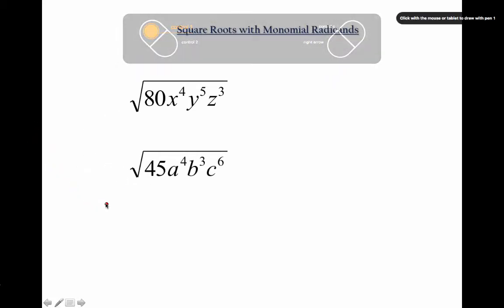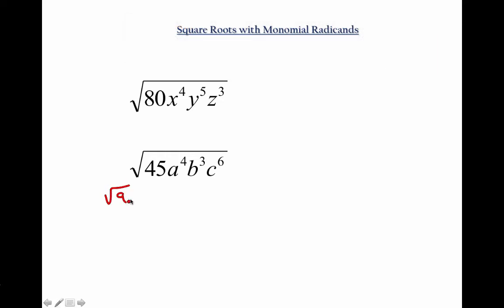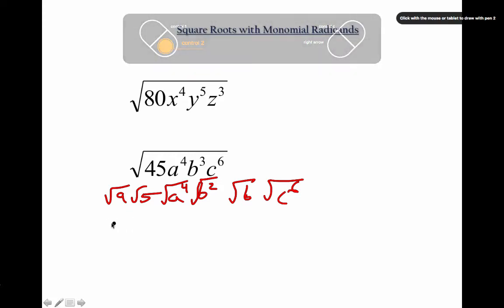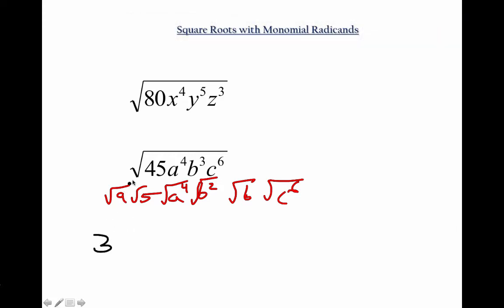45 will be 9 and 5. A to the 4th. B squared. B. C to the 6th. Get all the perfect squares out. Here we go. I got a 3. That one's done. I got an A squared.